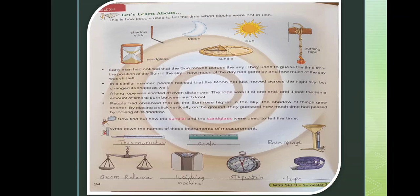So early man had noticed that the sun moved across the sky. They used to guess the time from the position of the sun in the sky. So they will identify the position of sun. If the sun is above the head, the time is one o'clock. If the sun is like that, vertically, at that time they will identify that is three or four o'clock like that. They identified the time by the position of the sun in the sky.